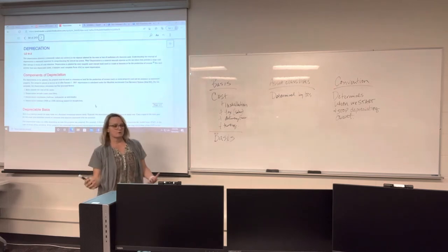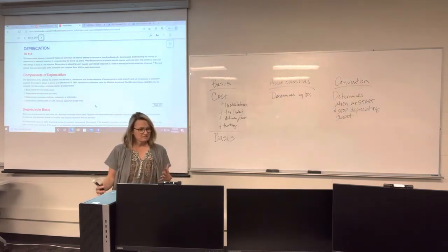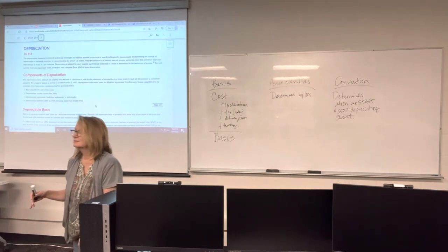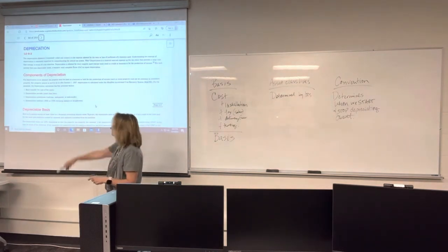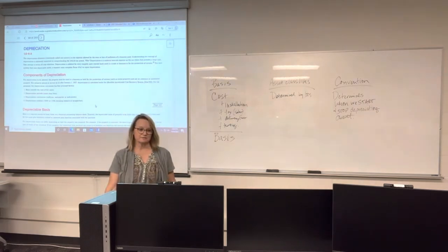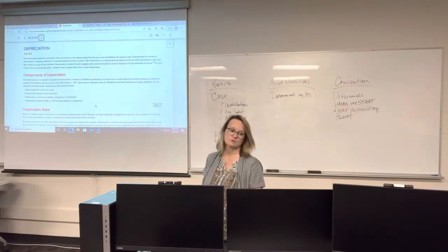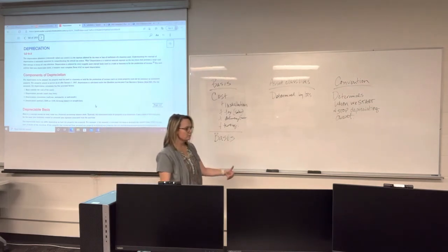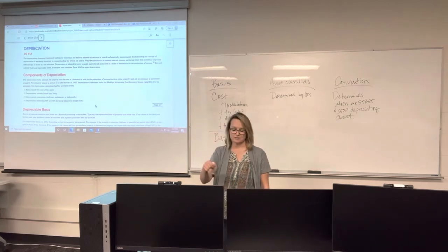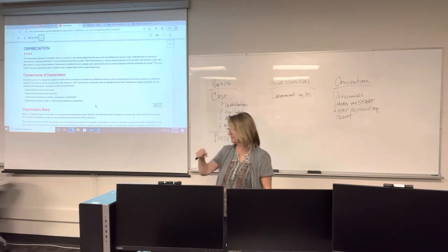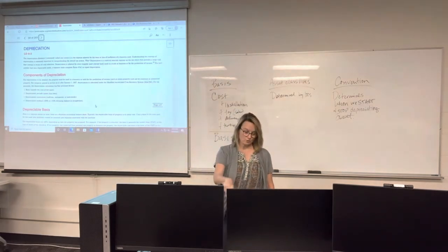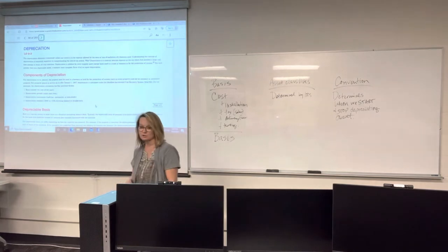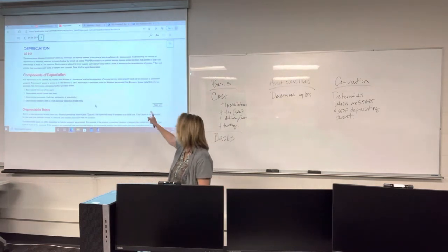Or we might use the mid-quarter convention and start on November 15th if we purchased it October 1st — that's the fourth quarter. So we've owned and used it for a month and a half before we even start depreciating it. There's also a mid-month convention, meaning we'd start depreciating it in the middle of the month in which we purchased it — October 15th. However, we never use mid-month for personal property; we only use it for real property.